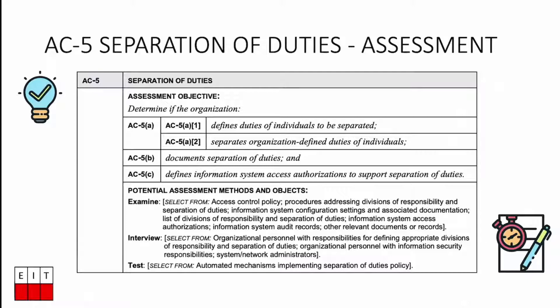Test methods include examine, interview, and test. We look at access control policy and procedures and any documents supporting separation of duties. We interview people responsible for defining those definitions and those with administrative and security functions. Then we test: as an administrator, can I create an account and then delete or modify the audit log proving that account was created? Can I hide that from audit? That's the key test.